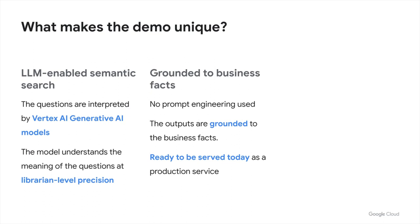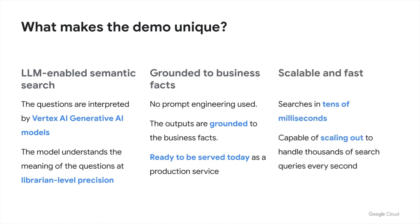It does not suffer from the limitation of LLM memory or unexpected behaviors of LLMs such as hallucinations. Third, Scalable and Fast. The demo gives you search results in tens of milliseconds while retaining deep semantic understanding capability. Also, the demo is capable of scaling out to handle thousands of search queries every second, enabled by the combination of LLM embeddings and Google AI's vector search technology.